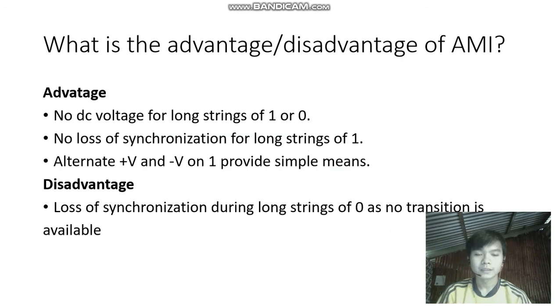So what is the disadvantage and advantage of AMI? Advantage: no DC voltage for long strings of one or zero, no loss of synchronization for long strings of one, alternate positive volts and negative volts on one provide simple means. The disadvantage of AMI: loss of synchronization during long strings of zero as no transition is available. So that's it for the disadvantage and advantage.